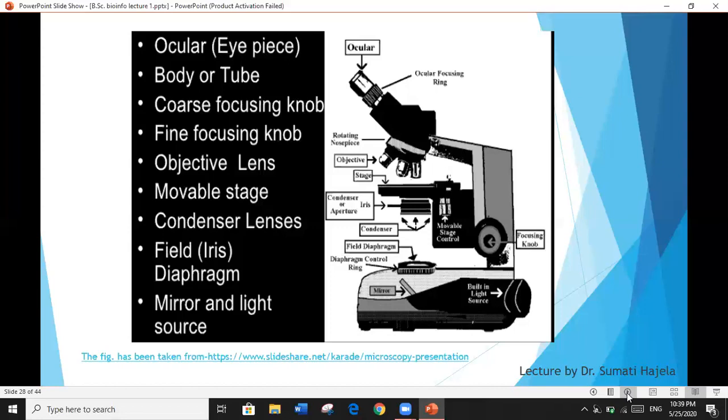Iris diaphragm: beneath the condenser is an iris diaphragm regulating the quantity of light entering into condenser. It helps to obtain bright light from light source.